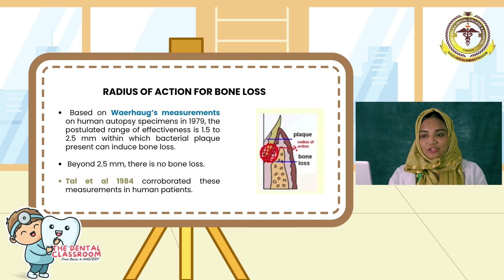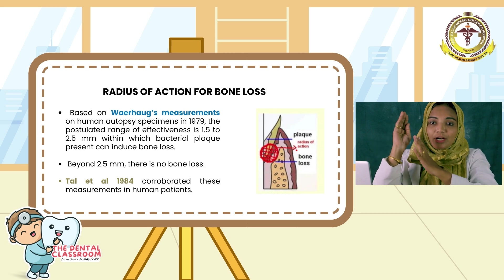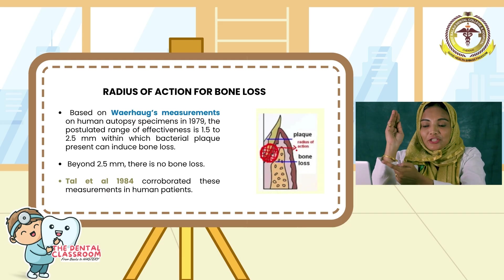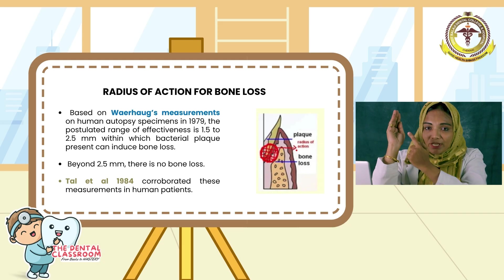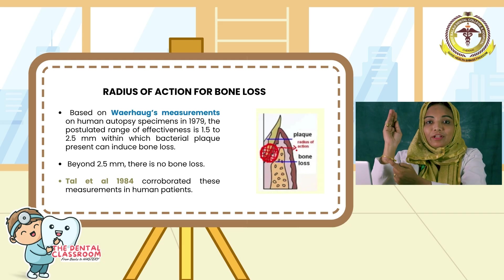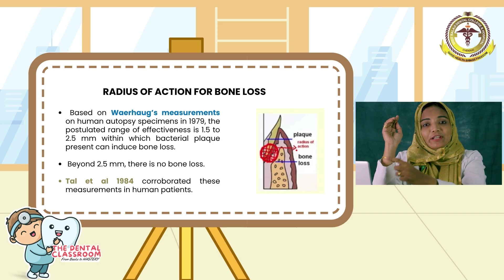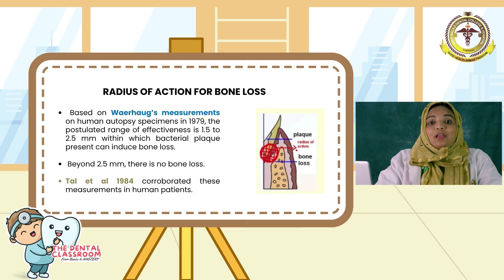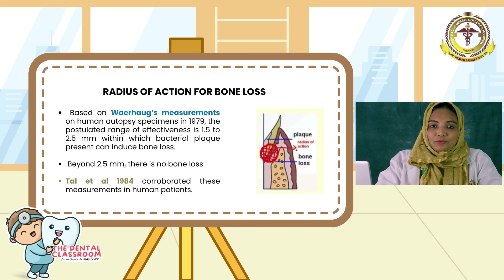Moving on to radius of action. For a bone loss to occur, the bone-resolving factors should be present nearby. Waerhaug's measurement gave us the maximum distance between the subgingival plaque and the inflammatory infiltrate and the alveolar bone to cause bone loss. The effective distance was found to be between 1.5 to 2.5 mm. Beyond 2.5 mm, there will be no bone loss. Later, Tal confirmed these measurements in human subjects.